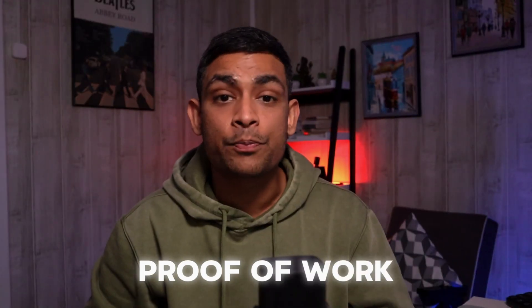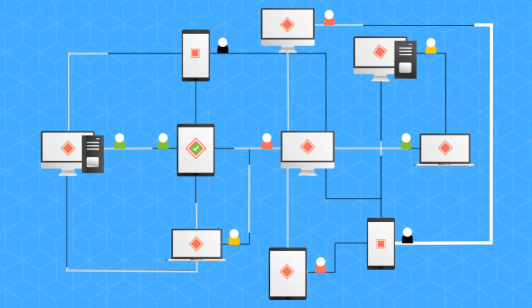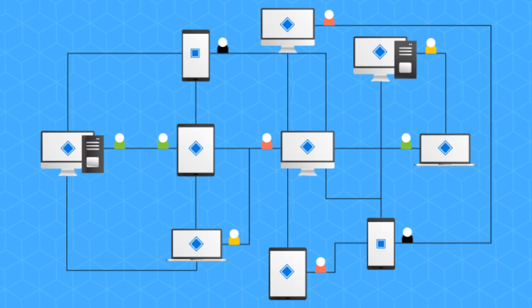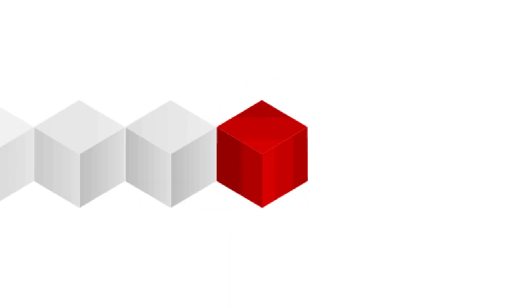The first and most popular consensus mechanism is Proof of Work — the OG, used by Bitcoin. Imagine a big competition where anyone can join using their computers. The goal is to solve a super difficult puzzle, like a complex math problem. Miners compete to solve these puzzles, and the first one to solve it wins the right to add a new block to the blockchain. As a reward, the winning miner gets some cryptocurrency and transaction fees.